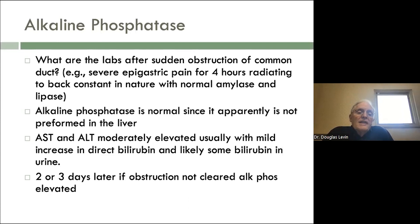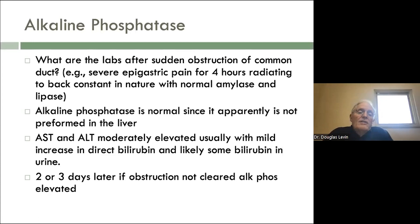The AST and ALT are moderately elevated and bilirubin appears in the urine if you have obstruction of the common duct. Two or three days later, that's when it becomes evident. So remind yourself: if it's been a very short obstruction, the labs won't look the way you thought they might.